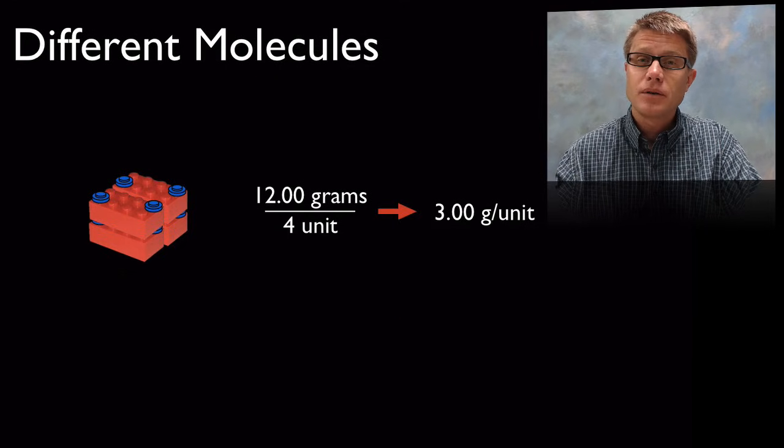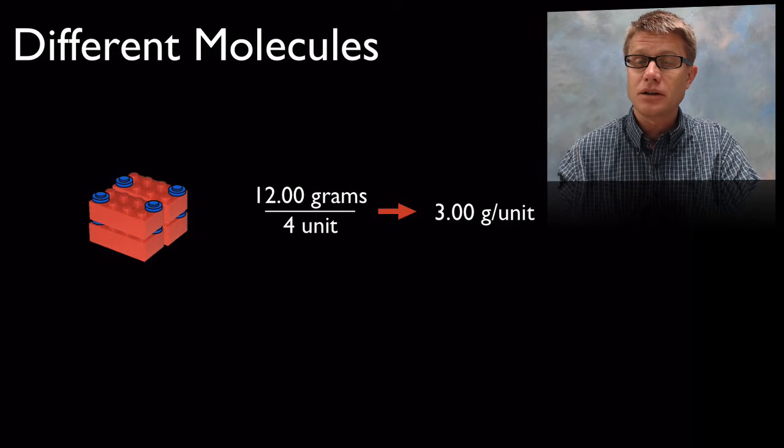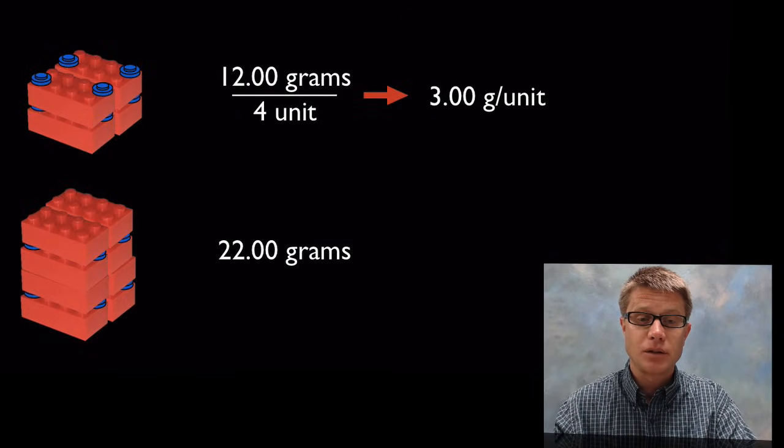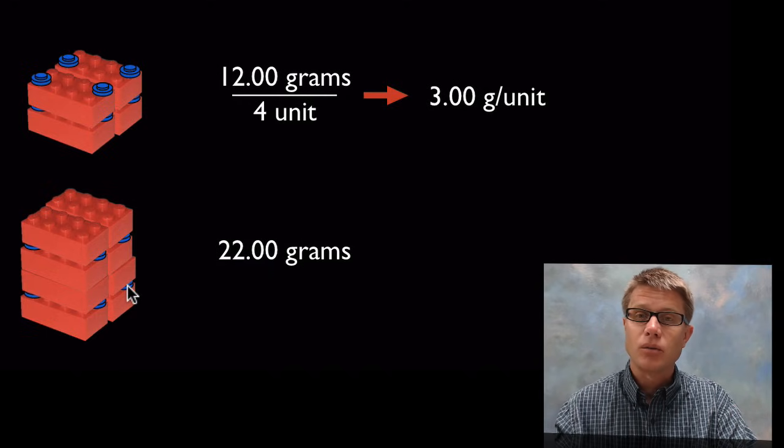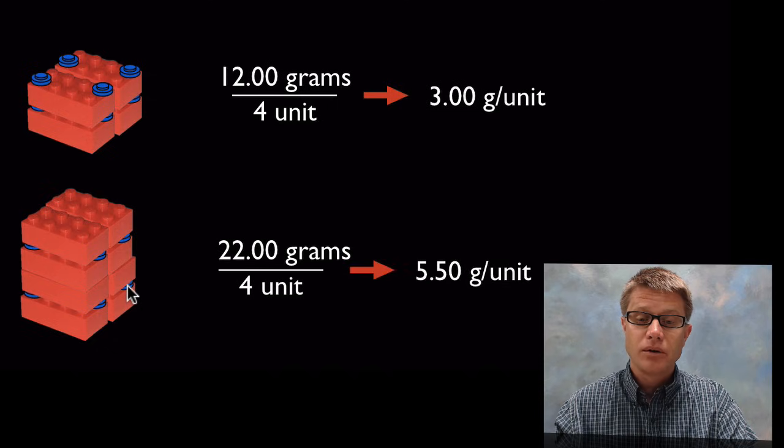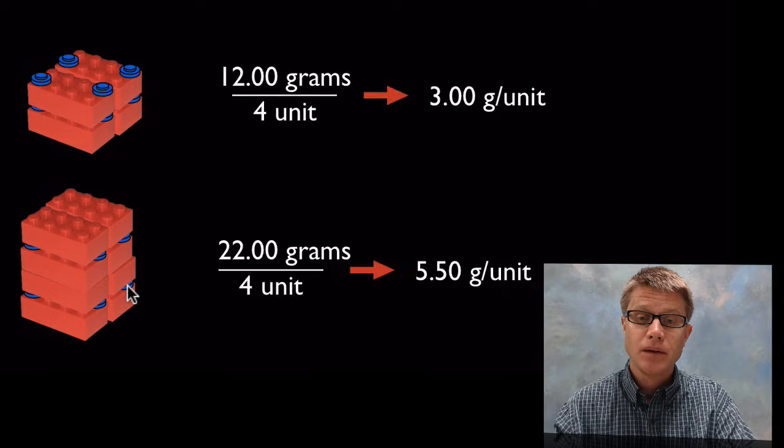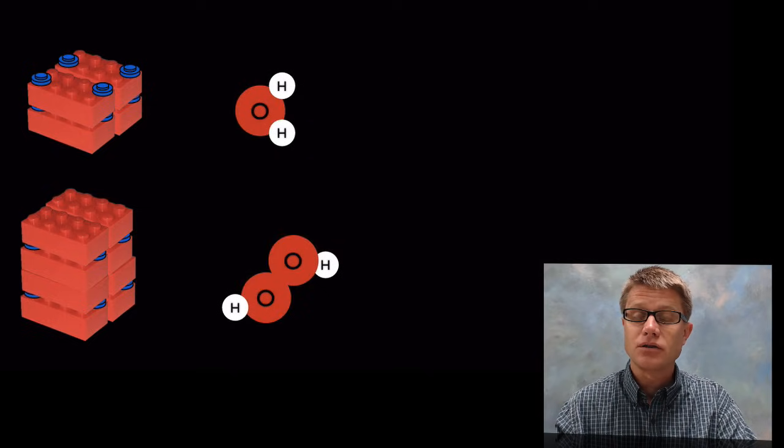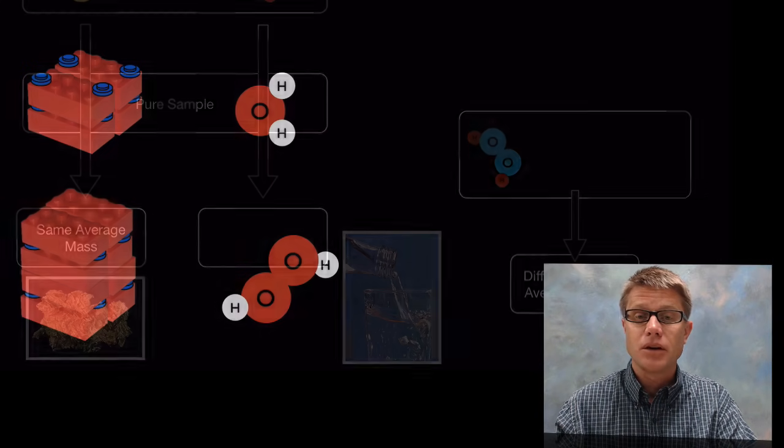But let's say we were to try using the same atoms in this analogy. So just the red and the blue, but we were to put it together in a different structure. And so let's say our building blocks look like this. So instead of building with 1 red and 2 blue, what if we were to build with 2 red and 2 blue? This is going to be a lot more like hydrogen peroxide. Well now we're going to get an average mass that is going to be higher because we're adding more units to it. And so if we were to look at two molecules that have the same atoms, oxygen and hydrogen, but they have them in a different ratio, then we're going to get a different ratio of their average masses.